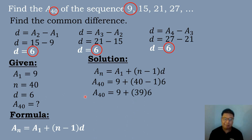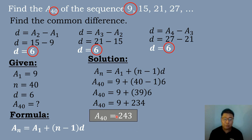We simplify the equation: a sub 40 equals 9 plus the quantity 40 minus 1 times 6. So 40 minus 1 is 39, and 39 times 6 is equal to 234. Then 234 plus 9 equals 243. So the value of the 40th term of the arithmetic sequence is equal to 243.